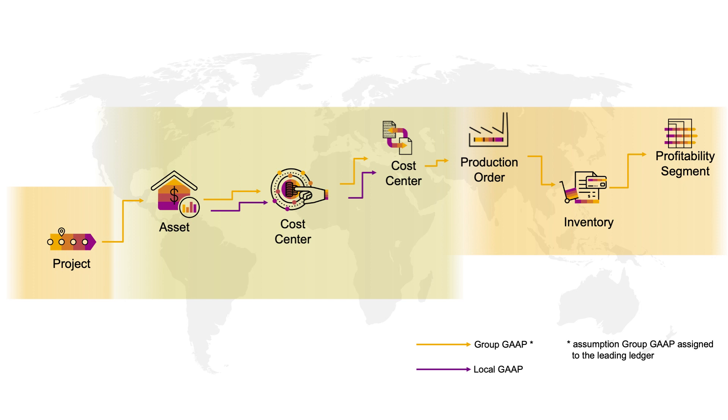Continuing our example: consuming these costs in a production process, inventory valuation upon completion of the production process, and the analysis by different market segments when sold are only tracked by the group accounting principle, typically. The same principle applies when getting into more complex situations, like when applying actual costing, as an example. Mind you, this does not mean that multiple valuations cannot be tracked, but it's not done in a harmonized end-to-end way.